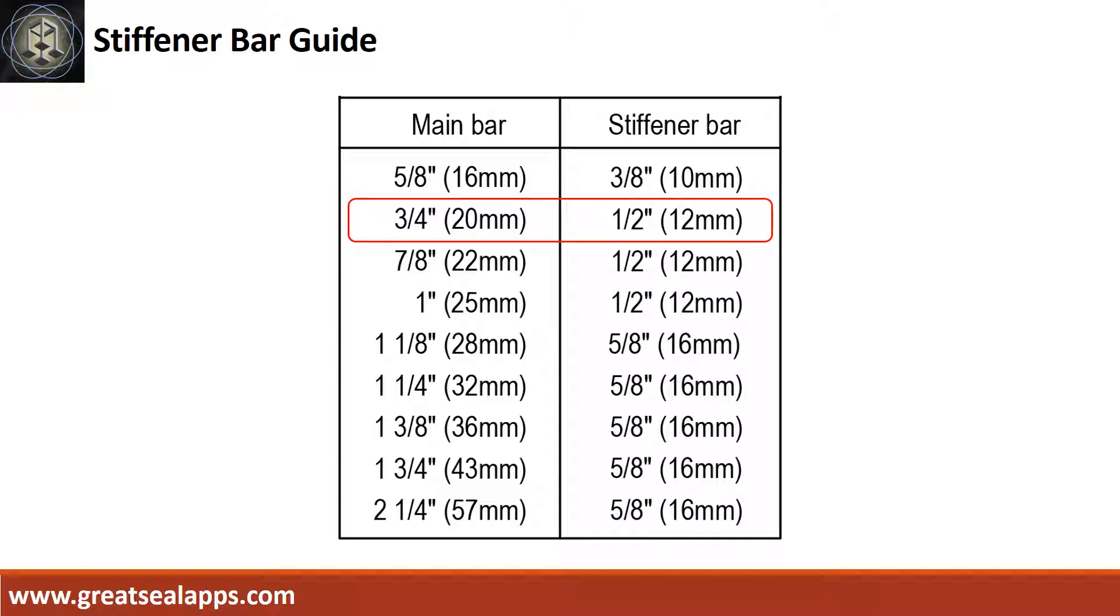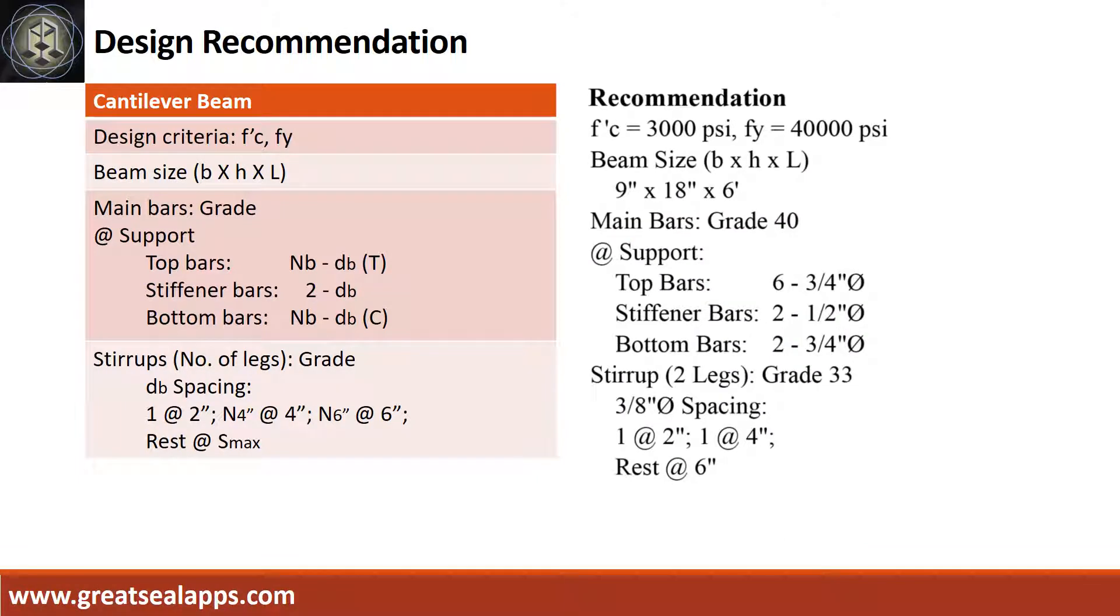For 3/4 inch diameter main bars, use half inch diameter stiffener bars. Design recommendation as follows. FC prime equals 3,000 PSI. FY equals 40,000 PSI. Beam size is 9 inches by 18 inches by 6 feet. Main bars of grade 40.